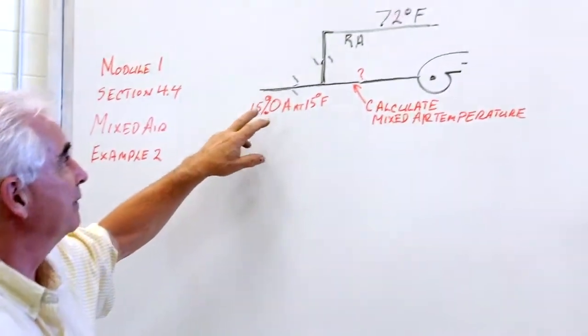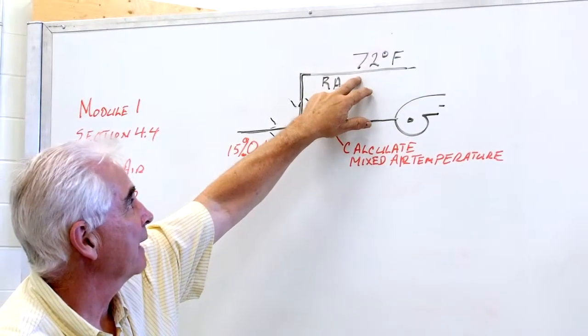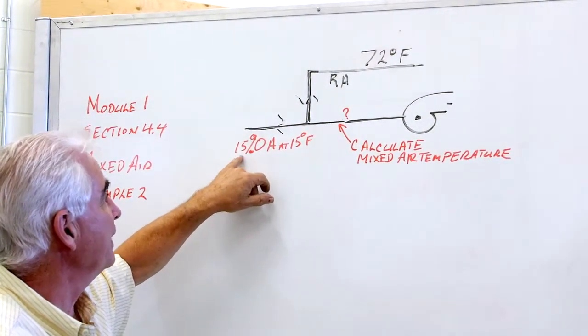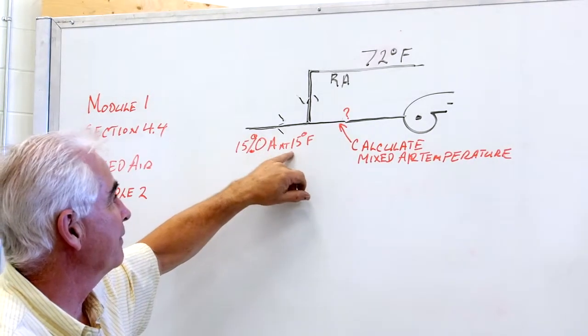Here we have some return air coming back at 72 degrees. We want 15% outdoor air at 15 degrees.